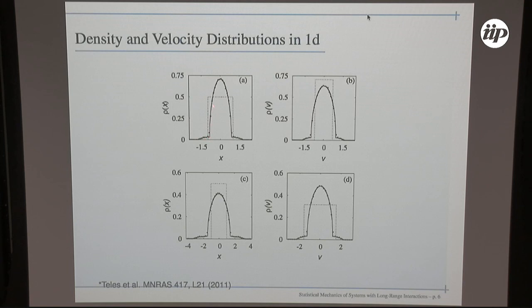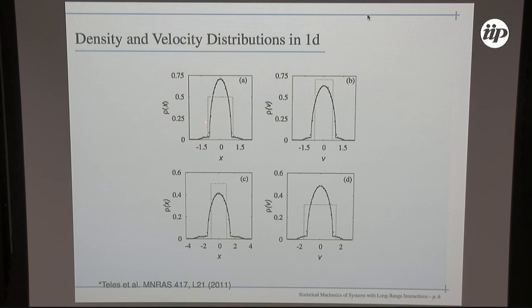Looking at the velocity and density distributions: the initial density distribution was uniform and the initial velocity distribution was also rectangular. The points here correspond to the final state. You see the system relaxes to this characteristic profile with a tail corresponding to the highly energetic halo particles. The solid curve going through all these points is the result of our theory — there are no adjustable parameters here, everything is calculated within the theory.